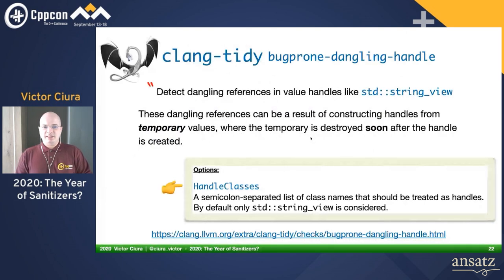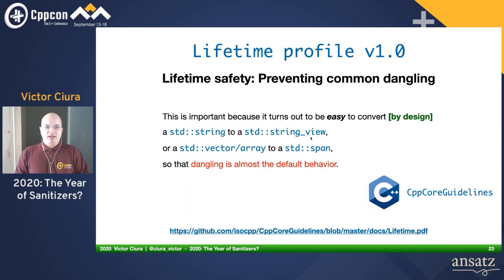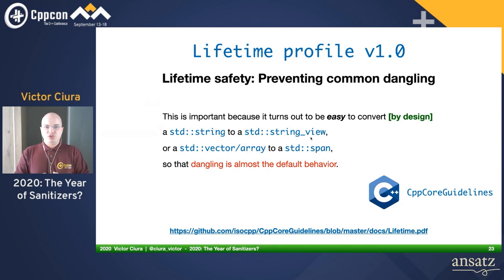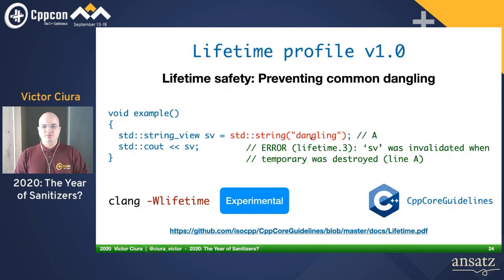There's an interesting check — bugprone dangling handle in Clang Tidy — meant to detect dangling references in value handle types like StringView. People have started using StringView freely, but it's very easy to construct a dangling StringView from a temporary string. The Lifetime profile checker's purpose is to prevent common dangling that can occur from constructing a StringView from a string, or span from a vector or array. Dangling can very easily occur, so this check can help you a lot.